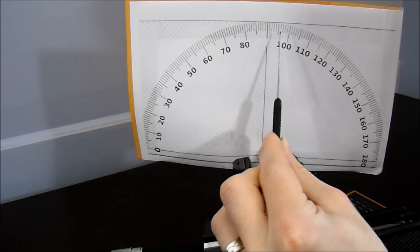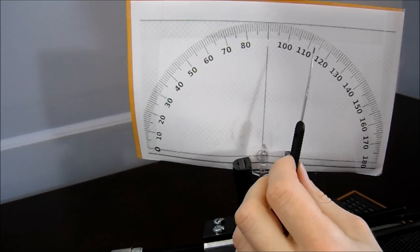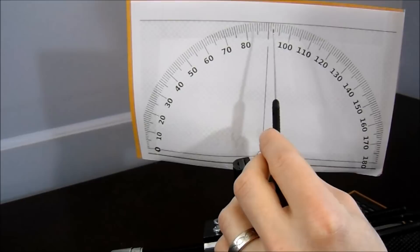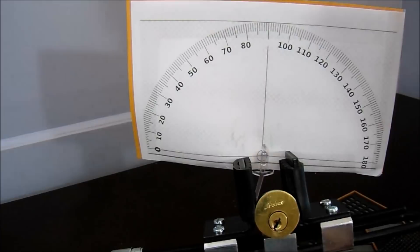One frustrating thing about false sets and counter-rotation is oftentimes if you are not careful, you can drop back down some of the pins that you've already set and you'll need to reset them again to get the lock open.